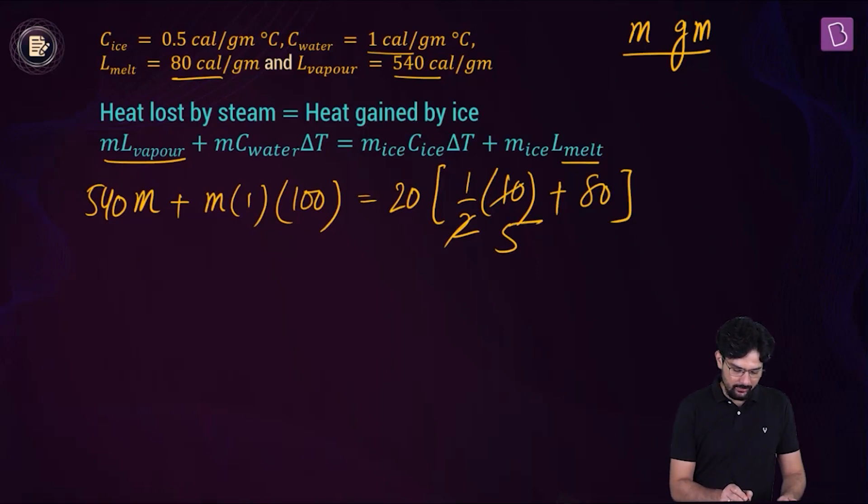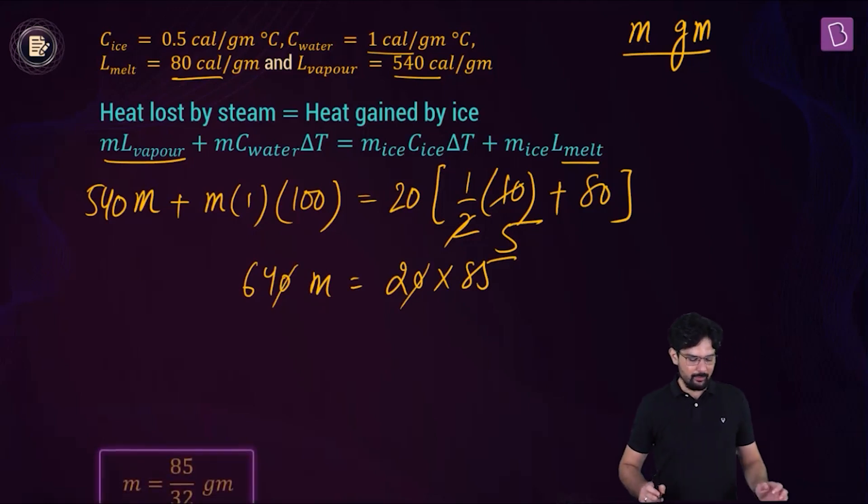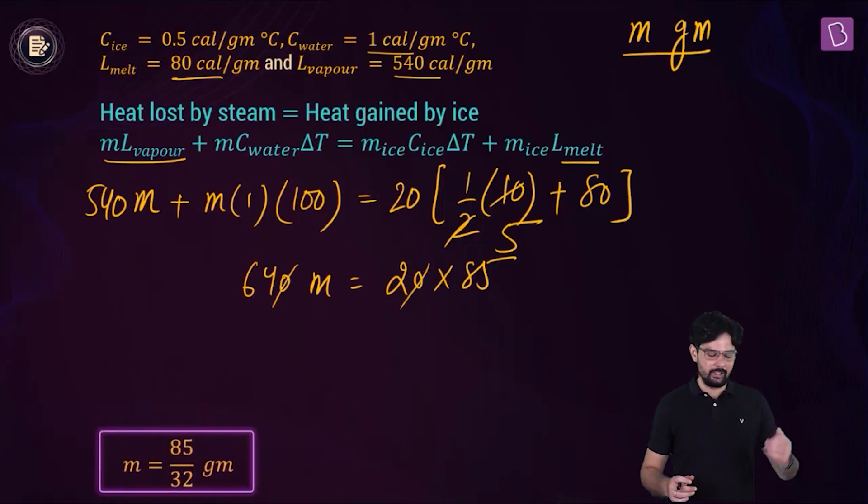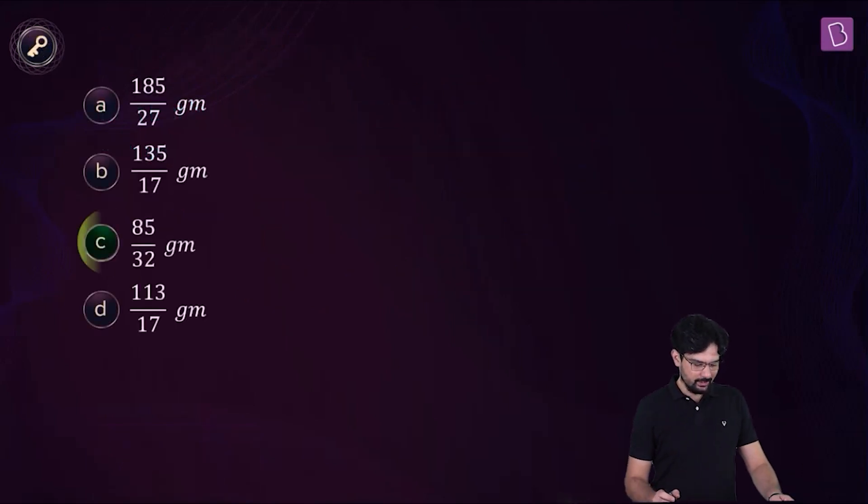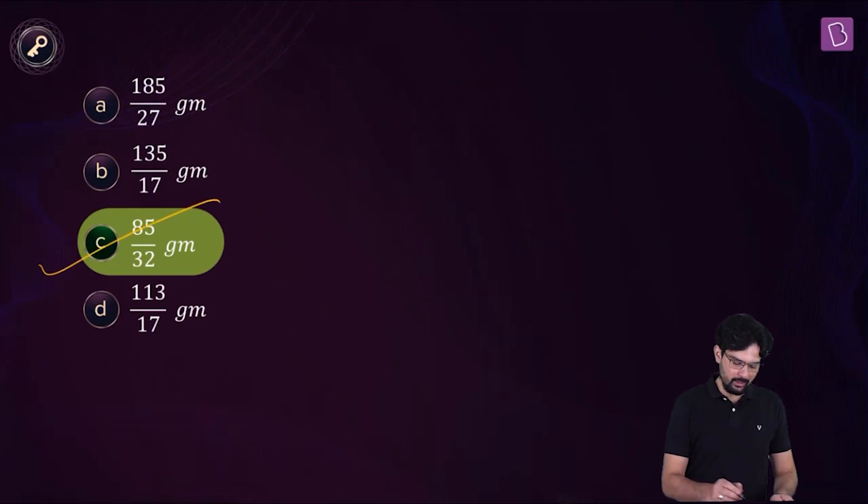So on the left hand side, we have 640 into M. On the right hand side, we have 20 into 85. And clearly from here, the value of M comes out to be 85 divided by 32. And don't forget, it is in gram. So in this case, option C must be right.